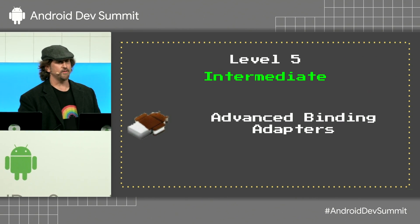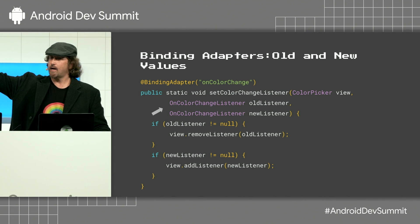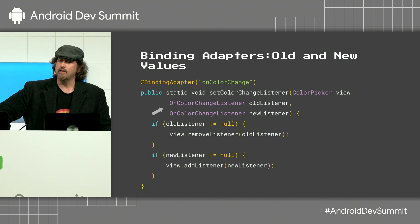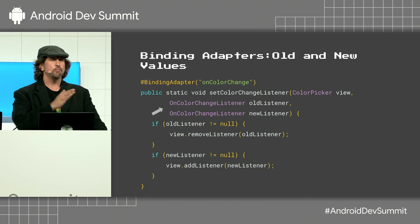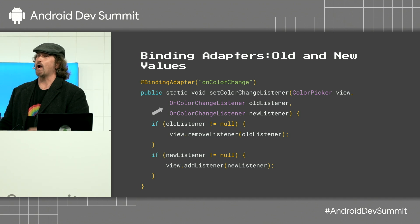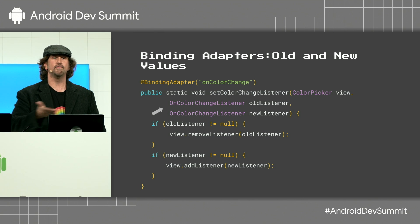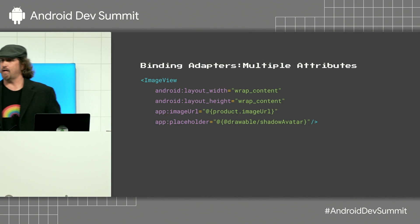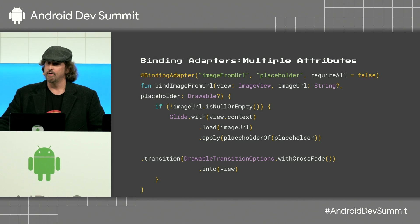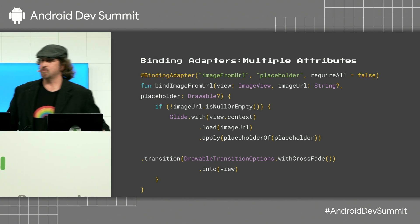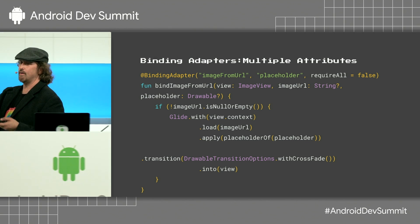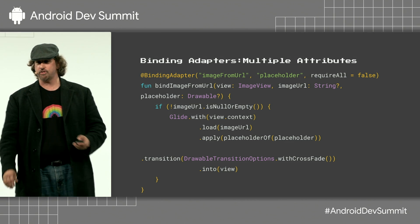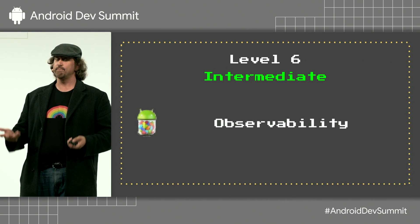We can also do a bunch of stuff with advanced binding adapters. Sometimes the old value is really important, such as with a color change listener. If you use the same parameter type for two parameters in a row, the binding compiler will actually pass the old value into the first one, followed by the updated one. Also, you can use multiple attributes, like in this image view — you can define multiple attributes when you declare the binding adapter, and then those are both available to your code.